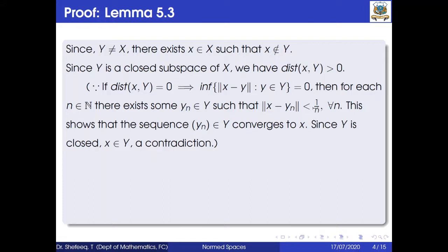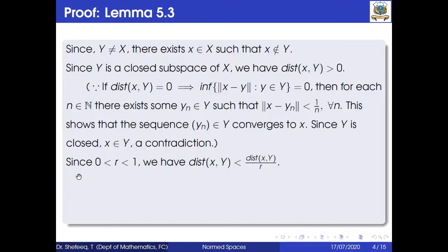This shows that the sequence y_n belongs to Y, and as n tends to infinity y_n converges to x. So y_n is a sequence in Y converging to x, and since Y is closed (Y equals the closure of Y), x belongs to Y. But our assumption is that x does not belong to Y — a contradiction. Therefore dist(x, Y) > 0.